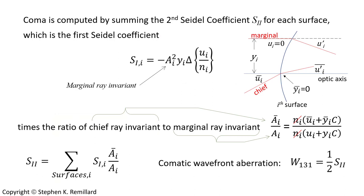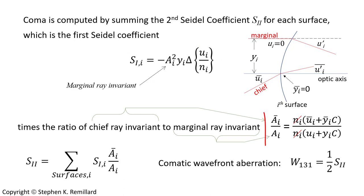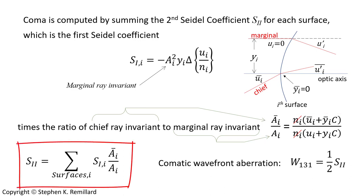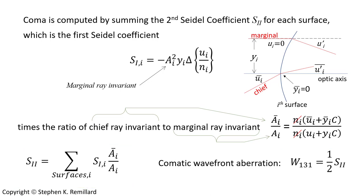The working equations for calculating coma: W₁₃₁ is the goal, obtained by calculating S₂, which is obtained by first calculating S₁ (spherical aberration) at each surface, correcting it by the ratio of invariants at each surface, summing over all surfaces to get S₂, and dividing by two to get the comatic wavefront aberration in units of length. This is then typically divided by the wavelength of light to give the comatic wavefront aberration in units of wavelengths.